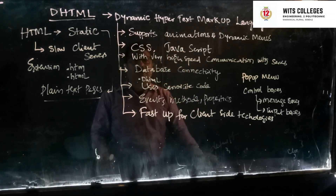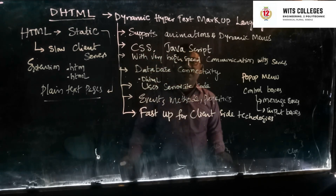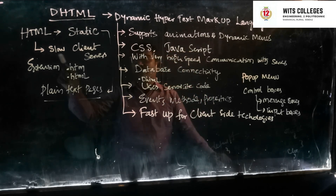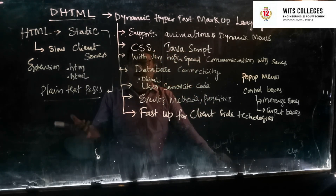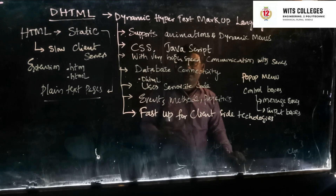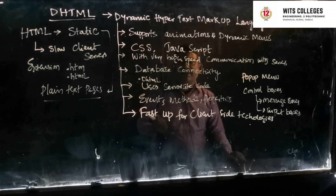DHTML is not a single technology; it is an association of technologies interlinked with CSS — Cascading Style Sheets — and JavaScript. DHTML is a very high-speed communication technology, offering high-speed communication with client servers, whereas HTML uses very low client-server communication. DHTML uses events, methods, and properties, and it is very fast with client-side technologies.